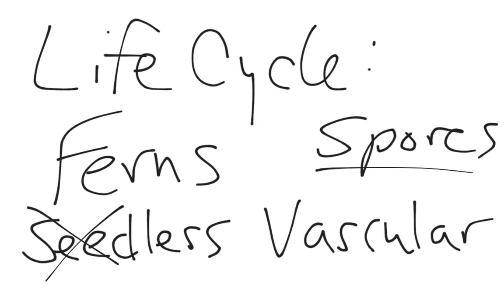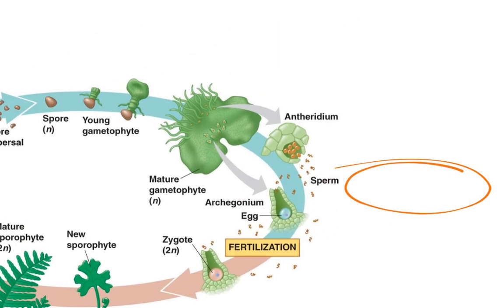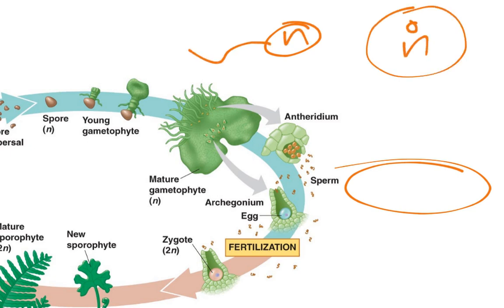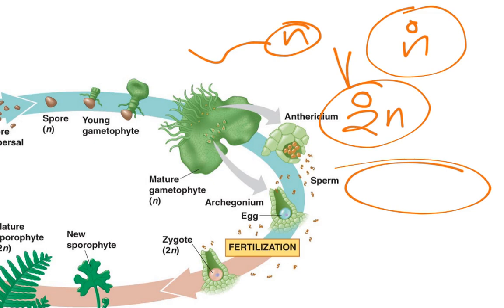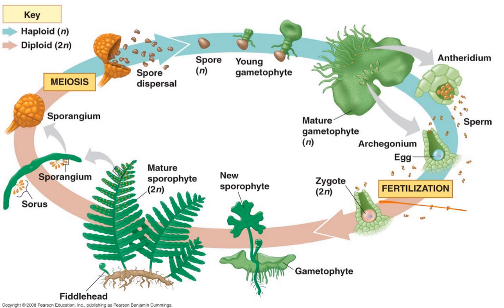Let's pull up the picture of our life cycle. Here we have the picture of the fern life cycle, and like always, I like to start with fertilization. So we are going to start right here. Fertilization occurs. Fertilization is the sperm and the egg, which are both haploid, coming together to make the zygote, which is diploid. So we're going to start here with fertilization — sperm and egg have come together and they have formed the diploid zygote.